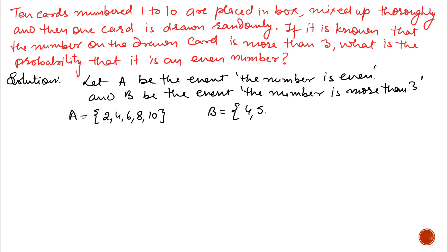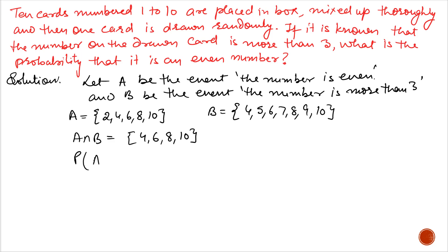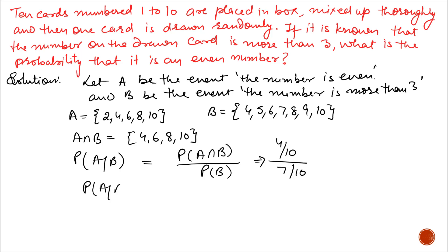And B is 4, 5, 6, 7, 8, 9, and 10. A intersection B is only 4, 6, 8, and 10, which is 4 events. So probability of A given B equals probability of A intersection B divided by probability of B. Probability of A intersection B is 4/10 because only 4 cards are common, and probability of B is 7/10. So the required probability is 4/7. Or we can say numbers more than 3 are 7, and out of those, even numbers are only 4. So the probability of A given B is 4/7.